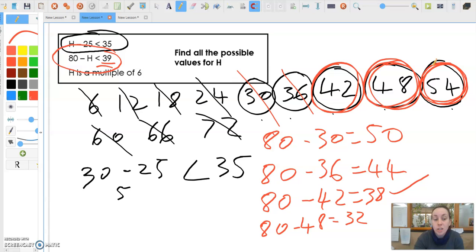I had to take it from the ones that we had. I can't do any of these because these wouldn't work with the first one. So it can't be them. So my answers are, all my possible values are 42, 48, and 54.